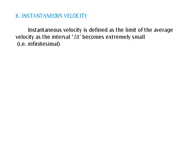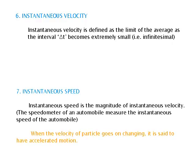Instantaneous Velocity is defined as the limit of the average velocity as the time interval Δt becomes extremely small, i.e., infinitesimal. Vector V is equal to Δx upon Δt, which is equal to dx upon dt. Instantaneous Speed is the magnitude of instantaneous velocity. The speedometer of an automobile measures the instantaneous speed of the automobile. When the velocity of a particle goes on changing, it is said to have accelerated motion.